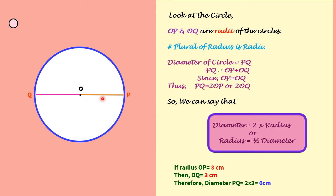Since OQ and OP are equal in length, we can write PQ equals 2 times OP or 2 times OQ. So we have an equation here: Diameter is 2 times radius, or radius is half of diameter.